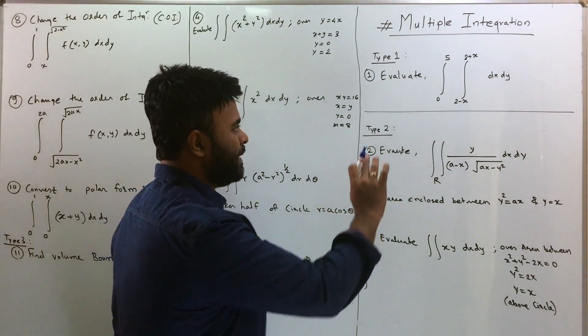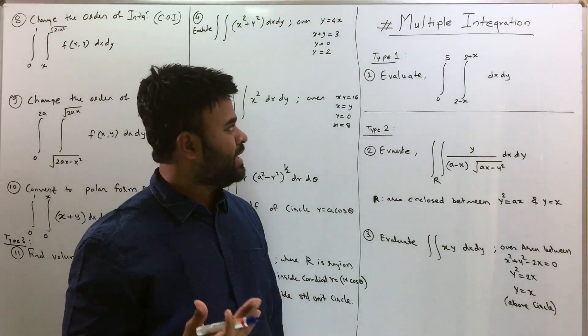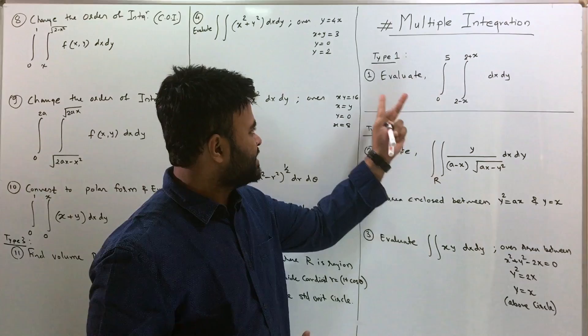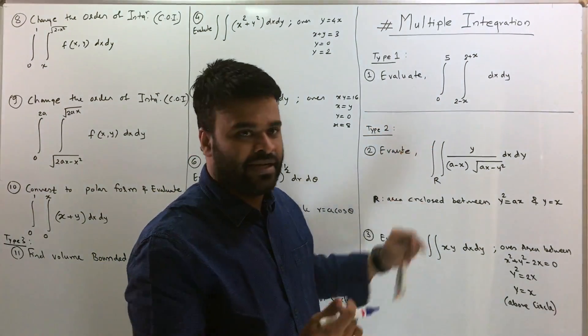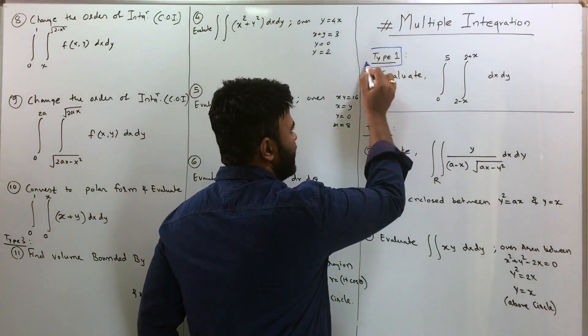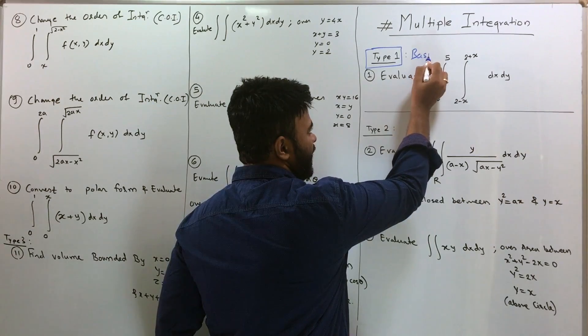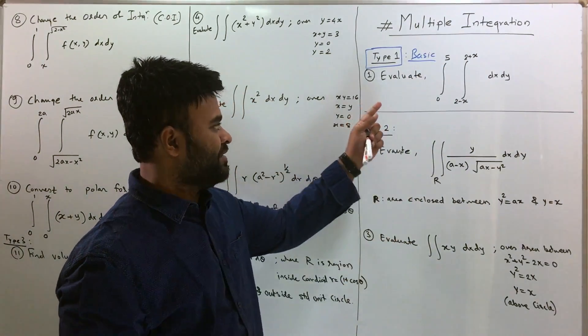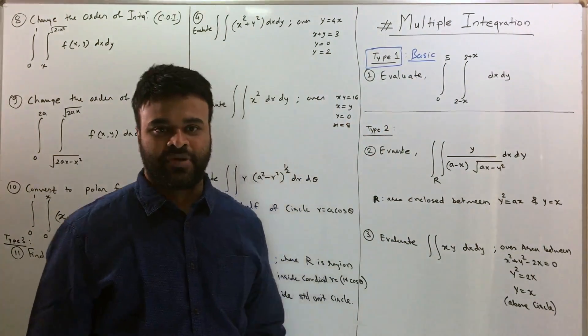So the first type is a basic multiple integration, it is a double integration you can see and you just have to evaluate and get the final answer. So type 1 is the basic and that has to be easy, it's the first question, limits are given, and just solve and get the answer kind of a question.